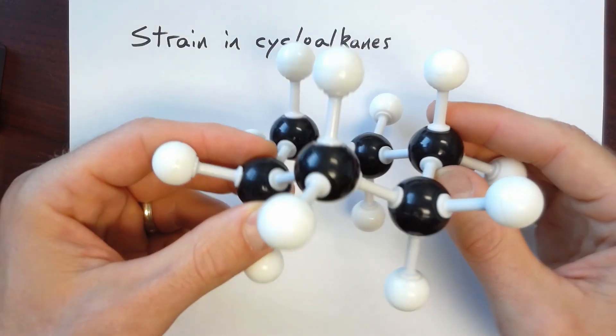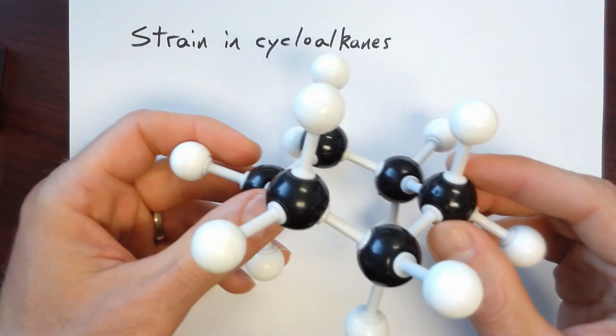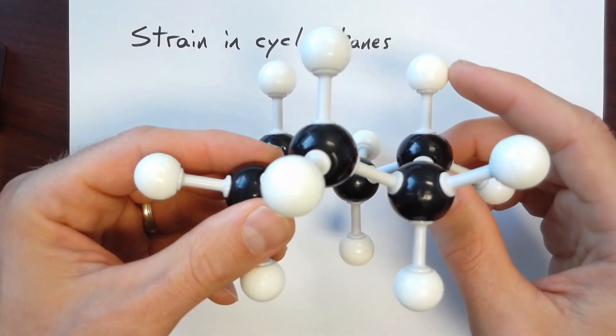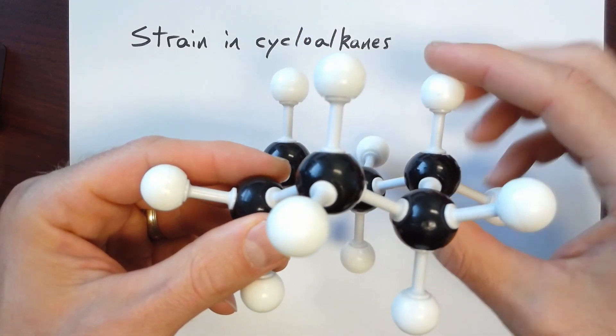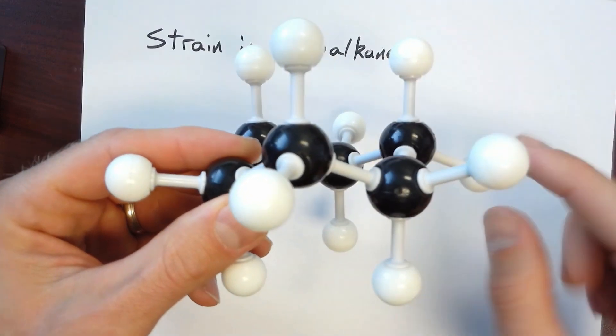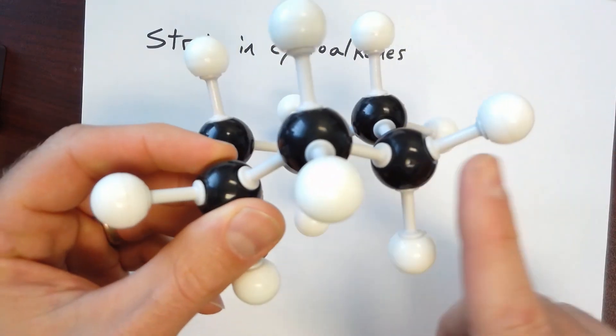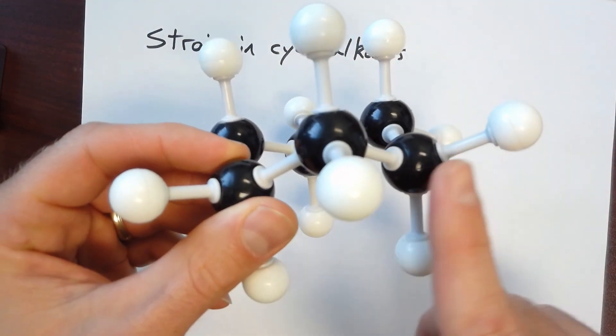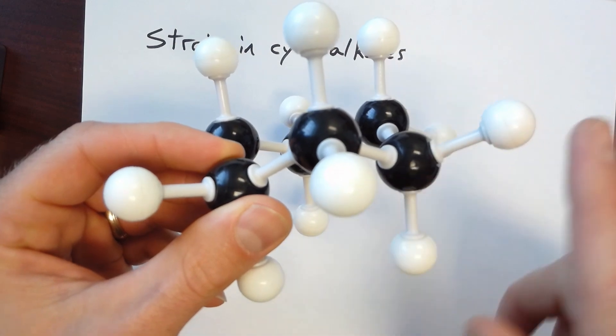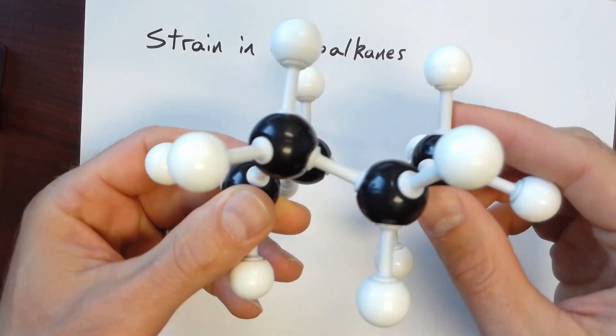The hydrogens can be in two different locations. One of them is what's called the axial location, so that is along the axis. And the other is in an equatorial location, that is going away from sort of the center of the molecule.